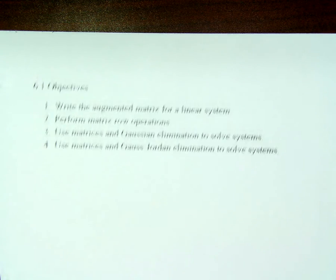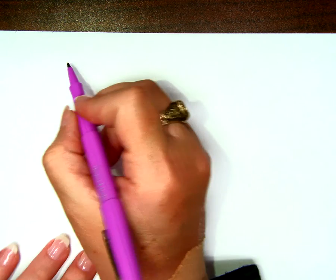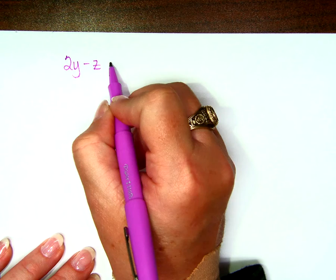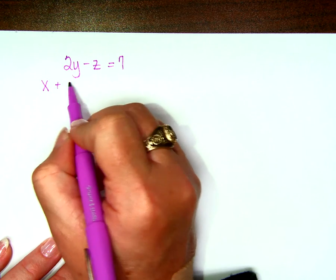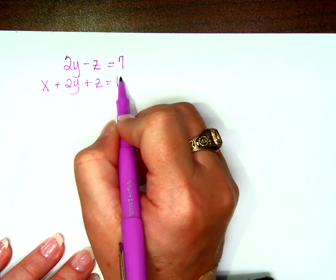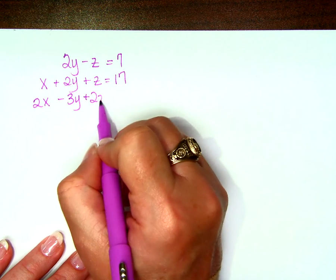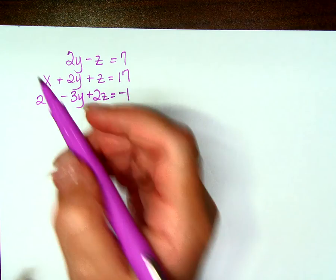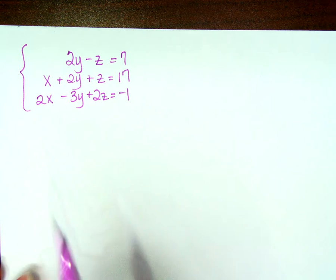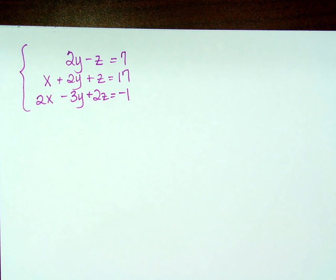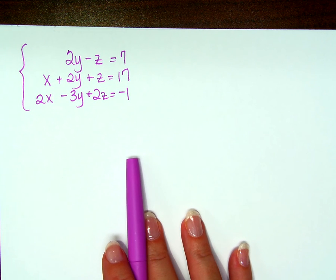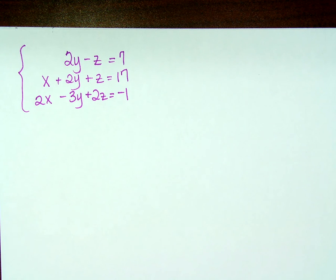I'm going to give you a system of equations. 2y minus z equals 7, x plus 2y plus z equals 17. So here's our matrix. Excuse me, here's our system, and you need to be able to write it as an augmented matrix. I really don't have any doubt that you can do this, but I'm going to write it as an augmented matrix so that you've never seen it before to know what to do.